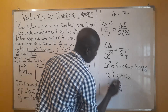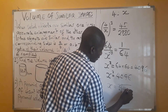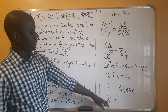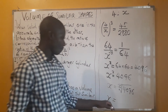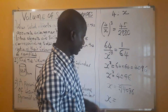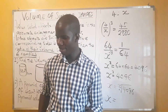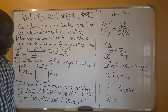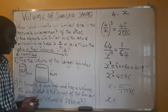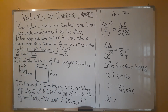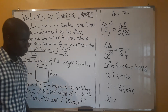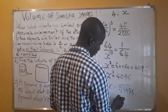So x equals the cube root of 4096. Working this out, the cube root of 4096 is 16. Therefore, the height of the larger pyramid is 16 centimeters.